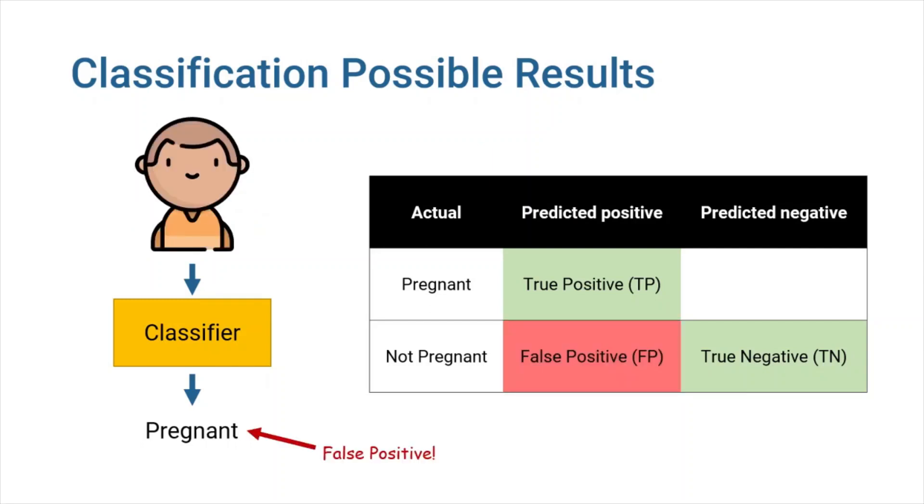Consider an awkward situation. A man takes this test and our classifier classifies him as pregnant. We know that, at least by the time I'm publishing this video, biologically, men are not capable of being pregnant. So, our model is definitely wrong. This is called a false positive.